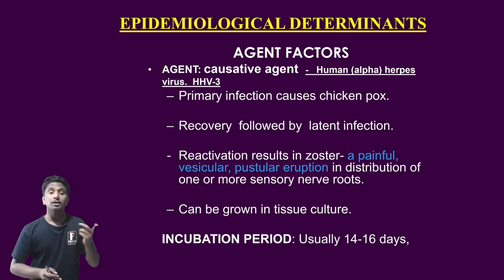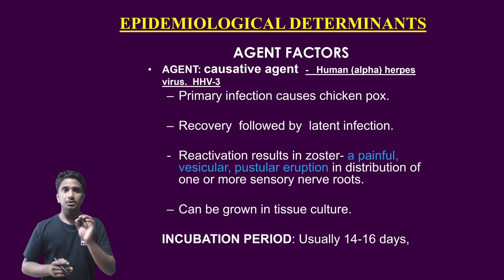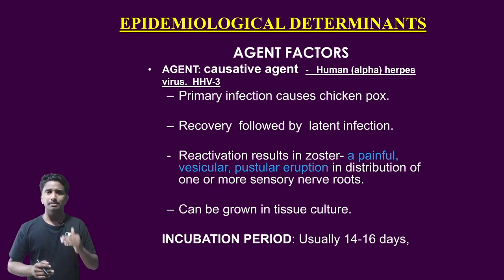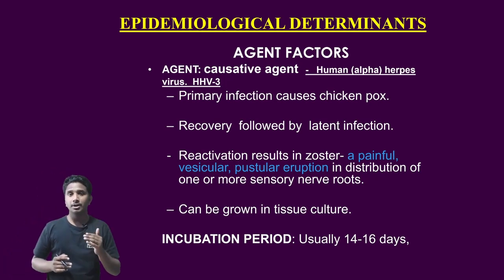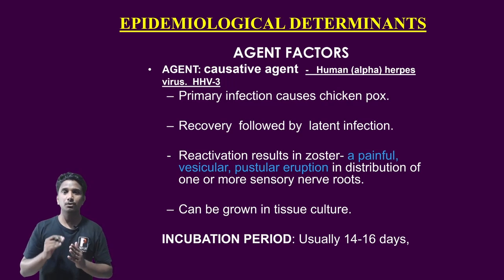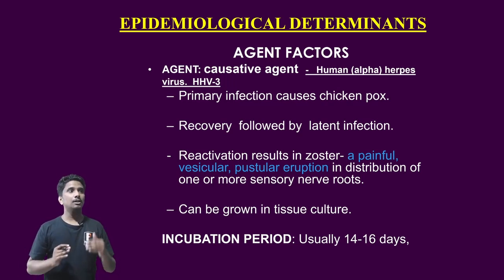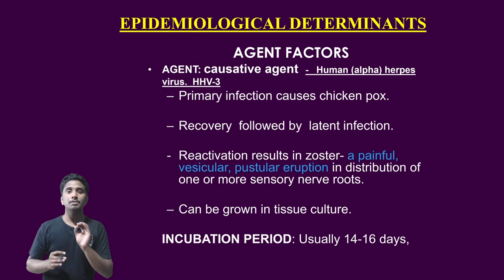Under agent factor, the causative agent is Human Herpes Virus (HHV). Under HHV there are many types, mainly eight: HHV 1, 2, 3, 4, 5, 7, and 8. Chickenpox is caused by Human Herpes Virus type 3, that is HHV-3.